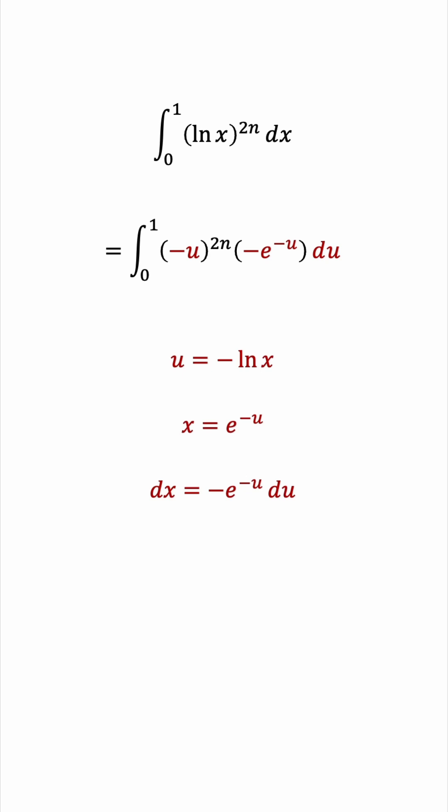The bounds are still in terms of x, so let's transform them. When x is equal to 0, well, the natural log is not even defined there, so really, we should be saying x approaches 0 from above. According to the substitution, u would be approaching negative the natural log of 0 plus, which means negative negative infinity or positive infinity. So that's the lower bound.